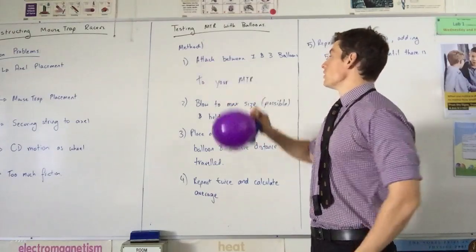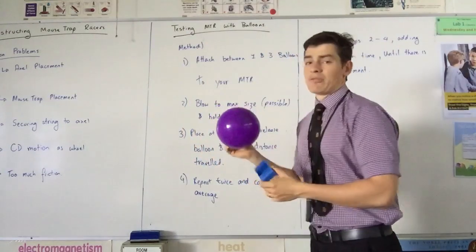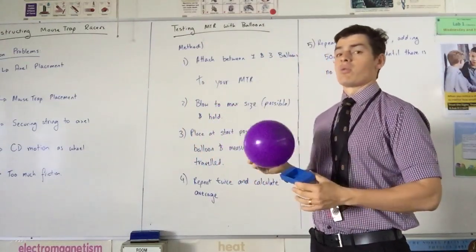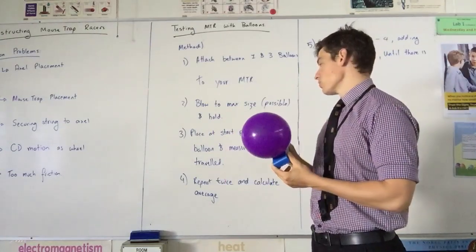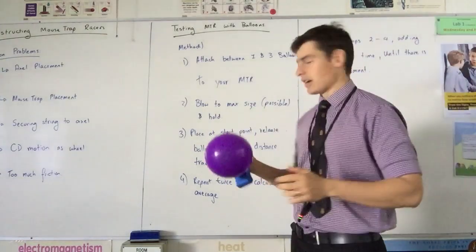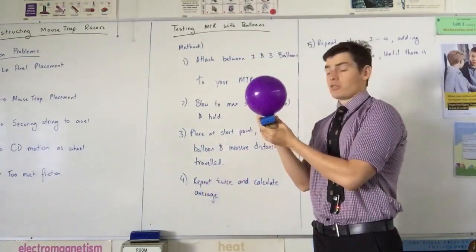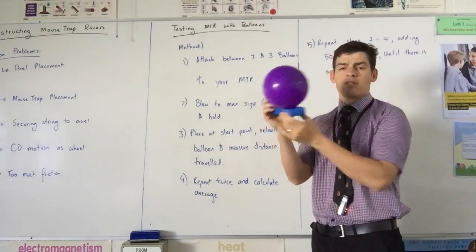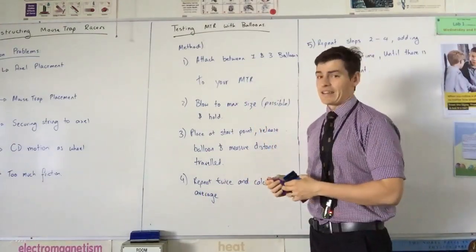So we attach the balloon to our mousetrap racer. We blow it up to max size. Obviously, we don't want this exploding, but what I'm trying to get to the point is that you need to be consistent, as you possibly can, with this balloon size. You're going to place it at a start point. We're going to place it at a start point and release the balloon, so the balloon pushes the car forward. You're going to repeat that twice and calculate an average.